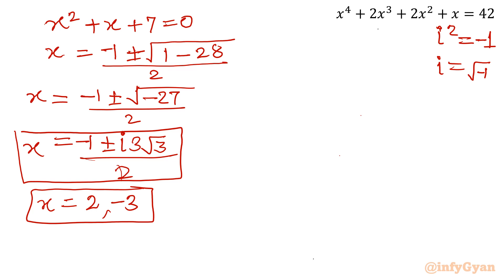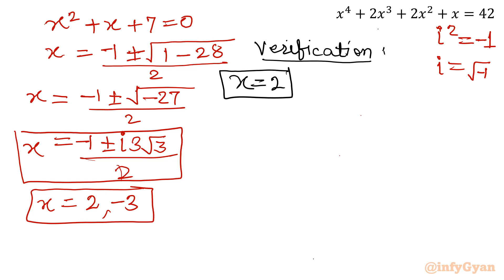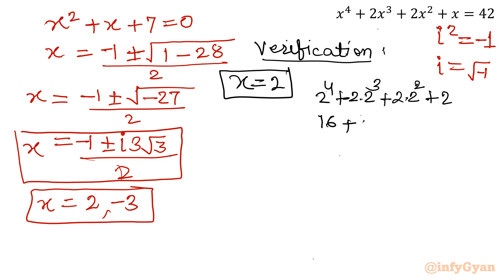So there are 4 solutions in total — 2 real and 2 complex. The 2 real solutions are x = 2 and x = −3. Let us verify the real solutions. For x = 2: 2⁴ + 2(2³) + 2(2²) + 2 = 16 + 16 + 8 + 2 = 42. It is verified.